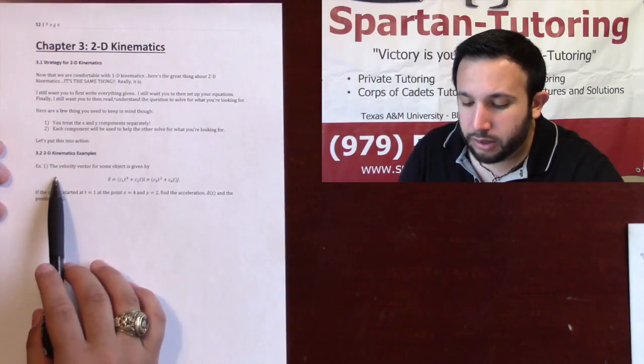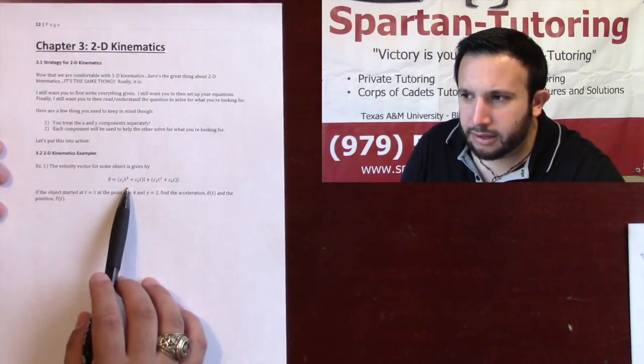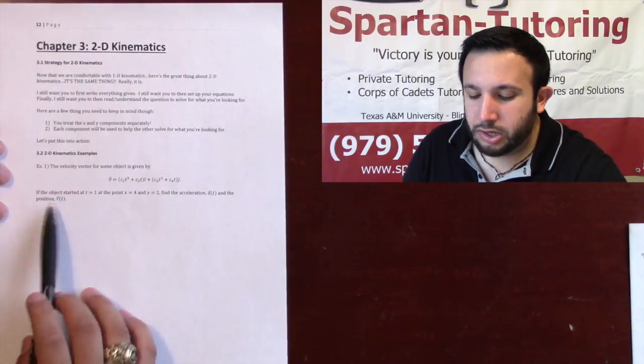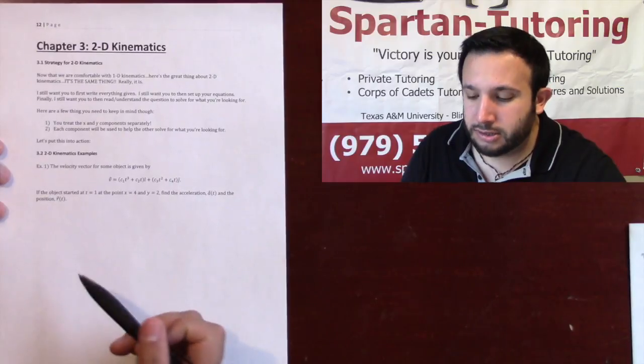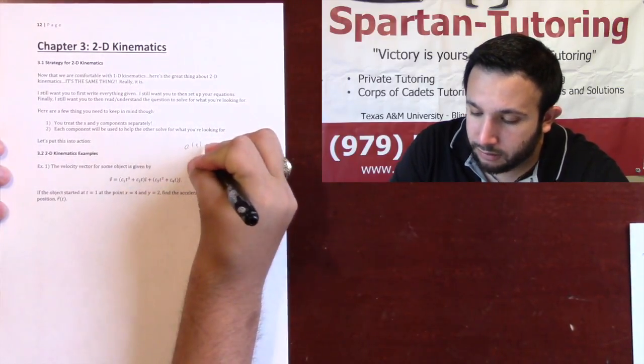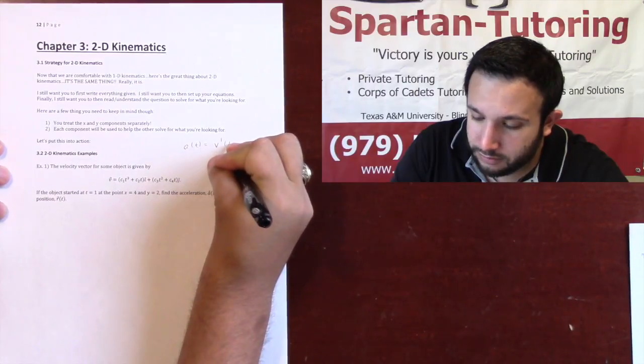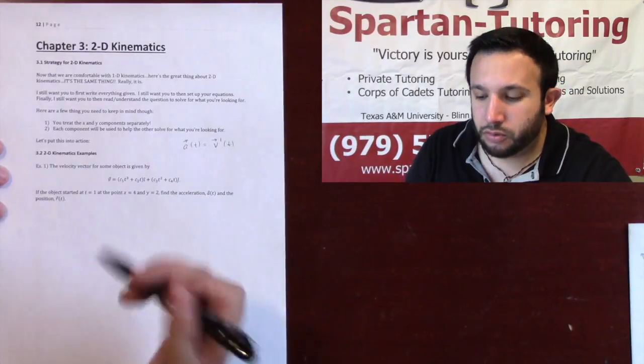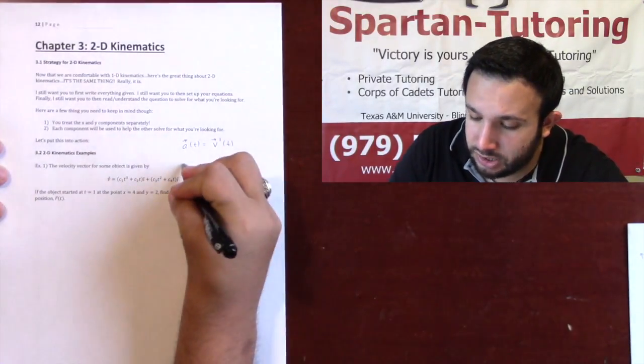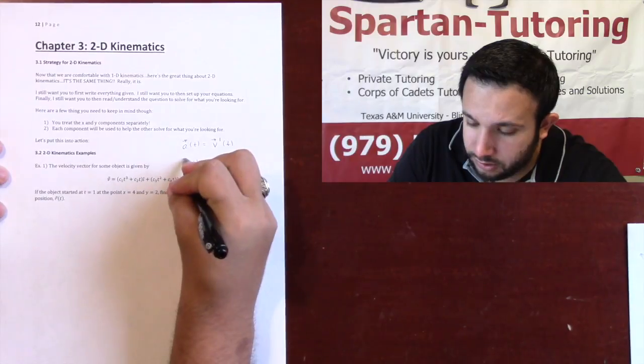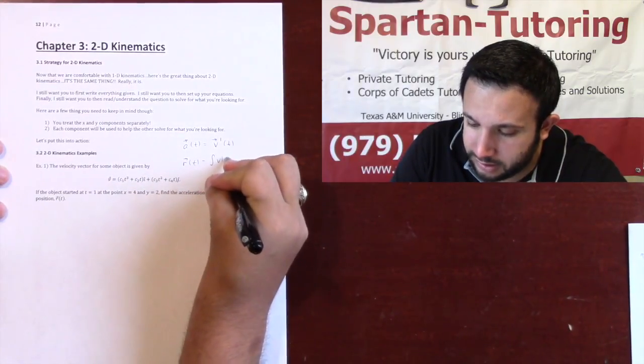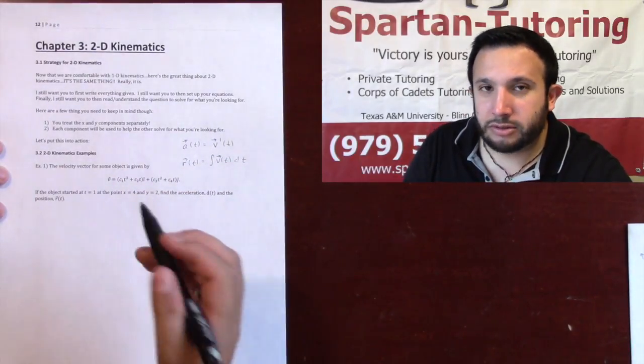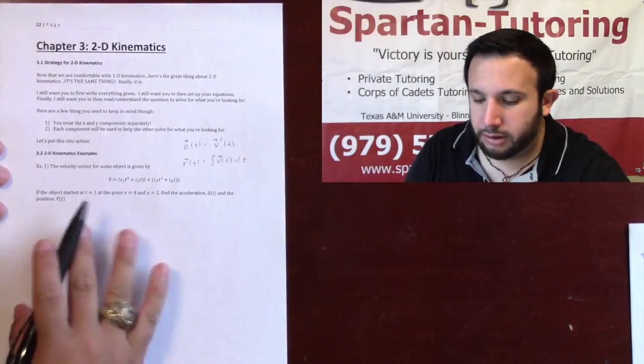Let's just really drive that point home here with number one. With number one, I'm giving you a velocity vector, and that was my number one for 1D kinematics. They wanted to find acceleration and position. Nothing changes. If I want to find acceleration, that's going to be the derivative of velocity. It's going to be a vector function. If I want to find acceleration, that's the derivative of velocity, and then once I want to find my position, my r of t, you're going to integrate your velocity and use your initial conditions to actually solve for those extra constants.